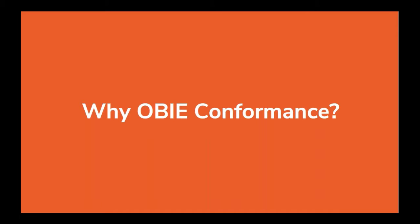So why do we want OBIE conformance? At first thought, everyone thinks that API compatibility and complying with the core PSD2 rules would be sufficient. But in the OBIE and EU specification, unlike some other PSD2 specifications, there are a lot of moving parts and other actors in play, like the directory. Because of this, OBIE wants to make sure that all parts interplay properly and are uniform throughout all clients, all TPPs and all ASPSPs.